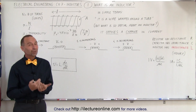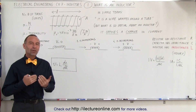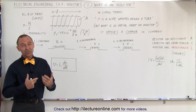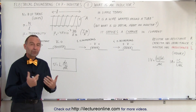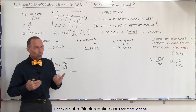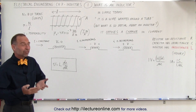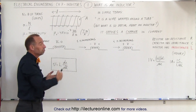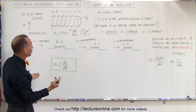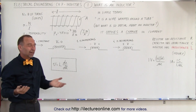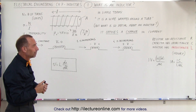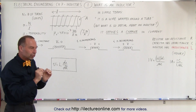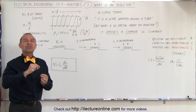Inductors are actually very simple devices, although there are a lot of different uses for inductors and a lot of different properties about electricity and magnetism that involve inductors. So what is an inductor? Well, in very simple terms, an inductor simply is a wire wrapped around a tube. That's all it is — a wire wrapped around a tube. It turns out that it has a very special property: an inductor opposes a changing current.